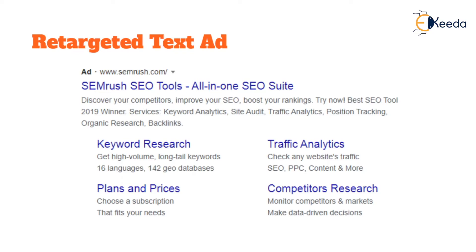They also created meta descriptions and headlines for key services like keyword research and traffic analytics. They have also included competitor research reports and a quick link to plans and prices, so that a customer who left the website without making a transaction — possibly because they could not find pricing information or did not like what they saw — has a direct motivational pathway in the retargeted ad.